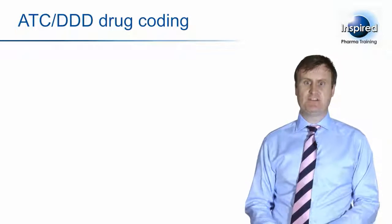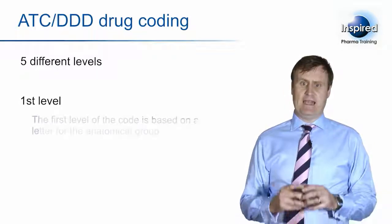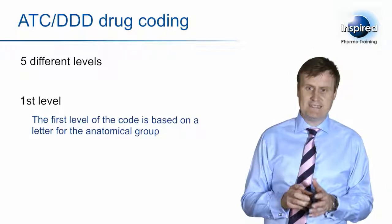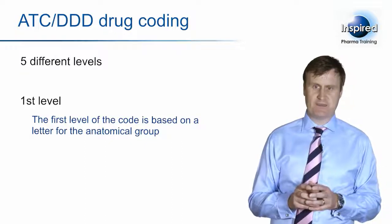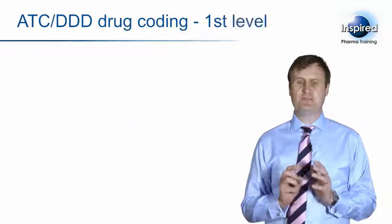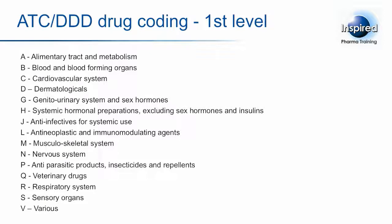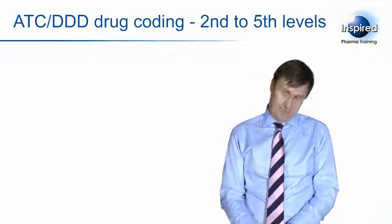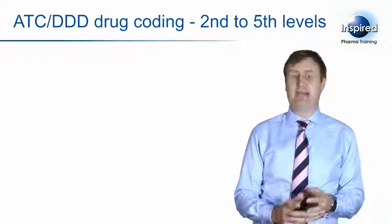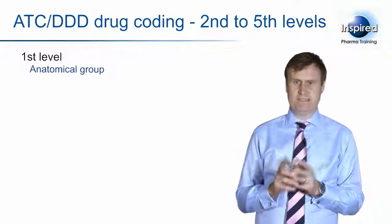In the system, drugs are classified into groups at five different levels. At the first level, a code is given based on the letter for the anatomical group where the drug works. There are 15 main groups with one alphabetical character assigned. The 15 groups of drugs forming the first letter are now shown. This first level is the Anatomical Group, and that allows one letter to be assigned to the code.